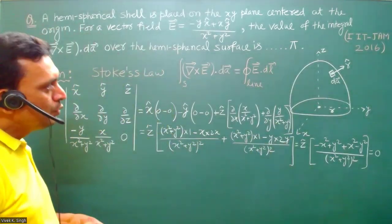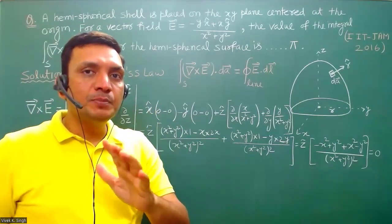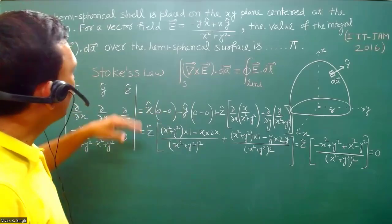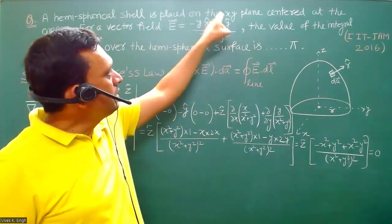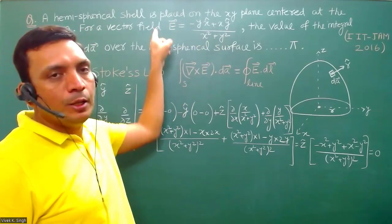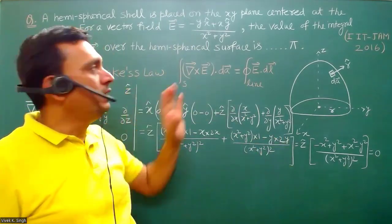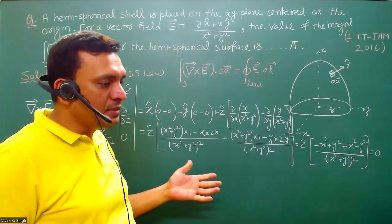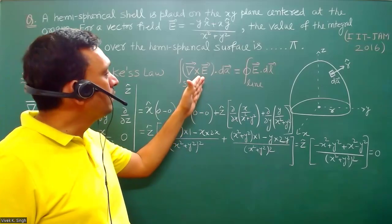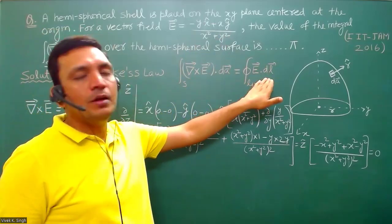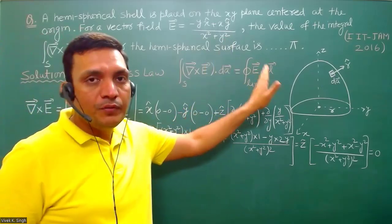Whenever curl is 0, you must check whether it is valid at all points. Looking at this vector field, at the point (0,0) the expression blows up — E tends to infinity. So curl of E is 0 at all points except (0,0), where it is not defined. Because curl of E is not defined at (0,0), you should not conclude the answer is 0 — instead, always check the right-hand side, the closed line integral.